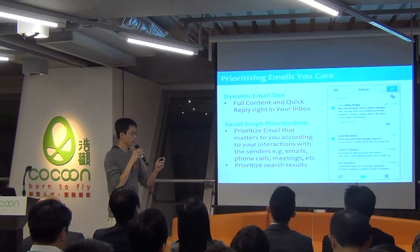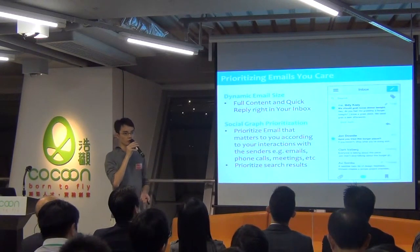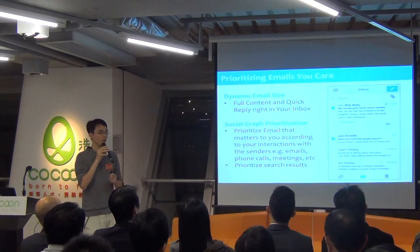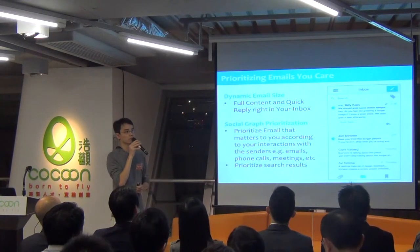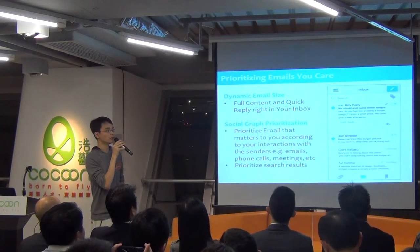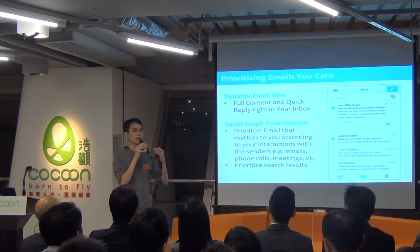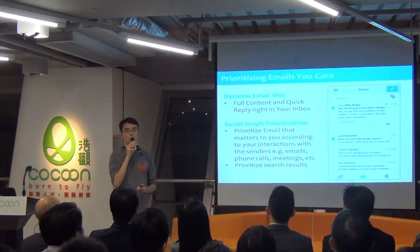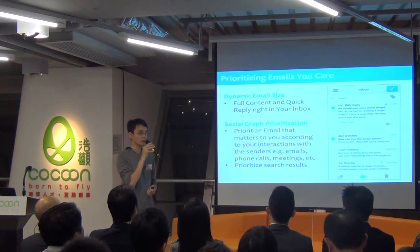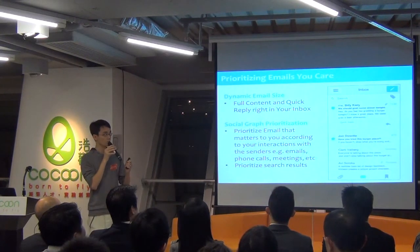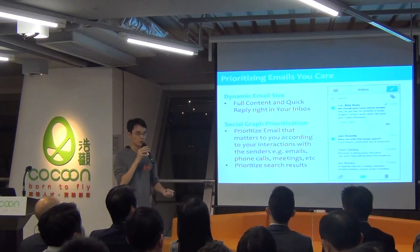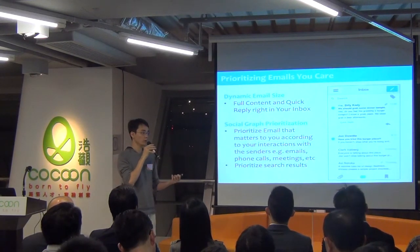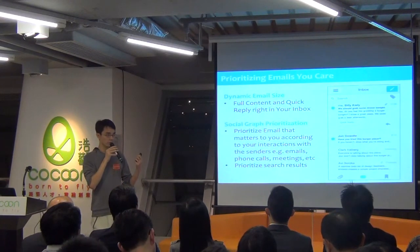Prioritizing emails you care about. Think about how an inbox works. Every email has the same weight — the same height, same size. How could you know which one is more important? You can only click into it to find out. What I'm suggesting is that we will analyze the person as well as the content for you. When we know that a person or piece of information is more important to you, we will show the full content in your inbox, as well as provide a quick reply so you can reply without having to open the email. We analyze how you've contacted them before — did you call them, did you meet up with them, did you email them often? These are just a few of the signals we use.